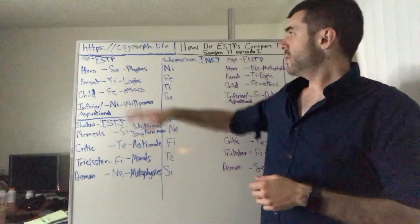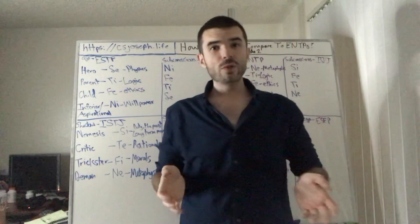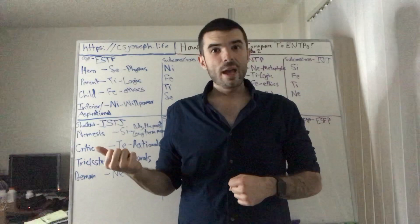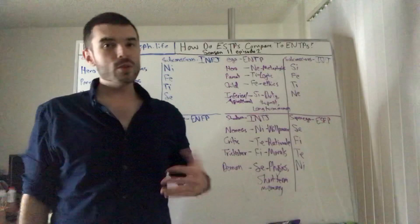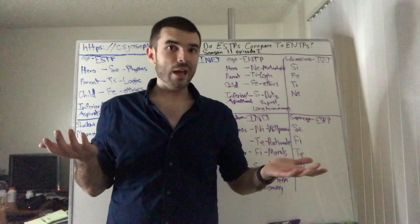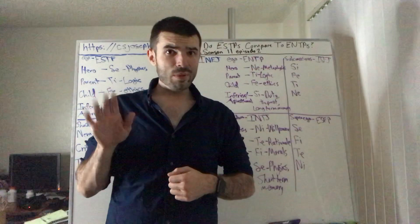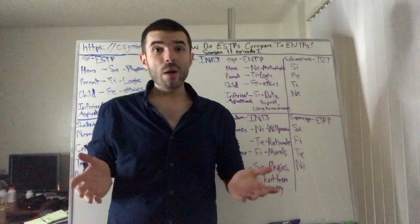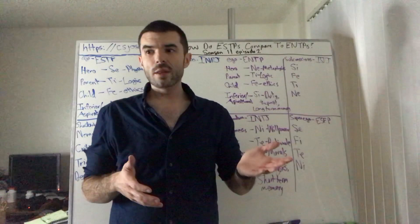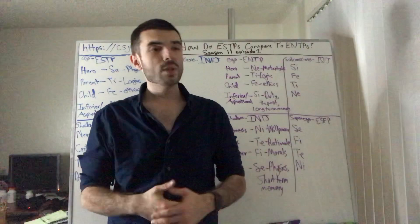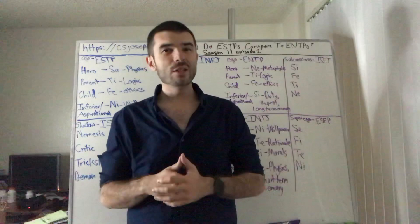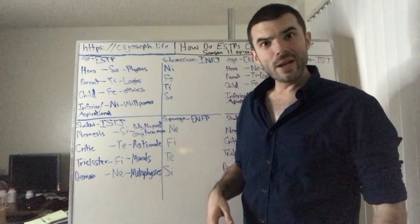The ESTP ego has an INFJ subconscious, ISTJ shadow, and ENFP superego. From virtue and vice: the virtue of the ESTP is chastity and the vice is nymphomania. For the ENTP, it's sincerity versus insincerity — which basically makes ENTPs insanely good liars, if not the best liars of all the types. I am an ENTP and I definitely know how to fib.